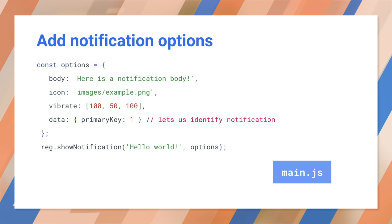You can specify an optional options object to configure the notification. This is passed in as the second argument in the show notification function. Body is the body text displayed below the title. Icon is the image displayed at the top of the notification. And vibrate is the vibration pattern for phones — in this case, 100 milliseconds on, 50 milliseconds off, 100 milliseconds on again.